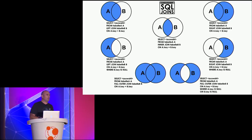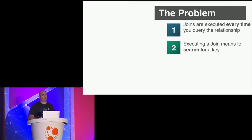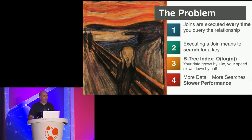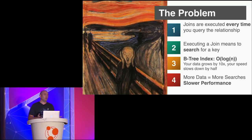If you want to query how data is related, you have to perform some kind of join — left join, right join, inner join. This is how we've been doing it for 30-plus years in SQL. The problem is that every time you want to know how things are connected, you have to execute that join, find those foreign keys, and follow them through an index. B-tree is a log-n data structure, so as your data grows by 10, your speed only slows down by 2. But with big data and more joins, you get slower and slower performance, and that's usually when you come to NoSQL.